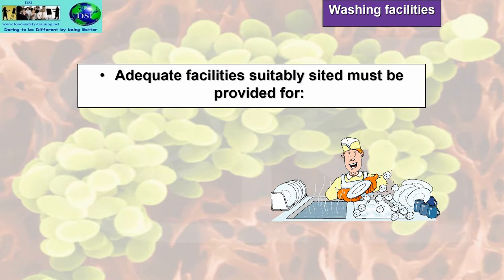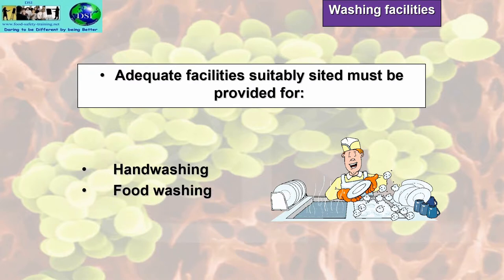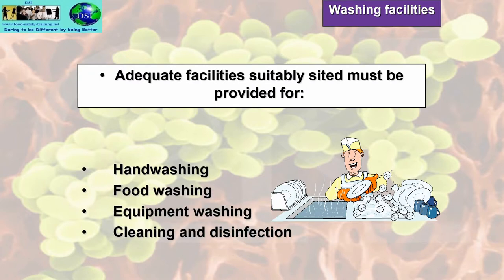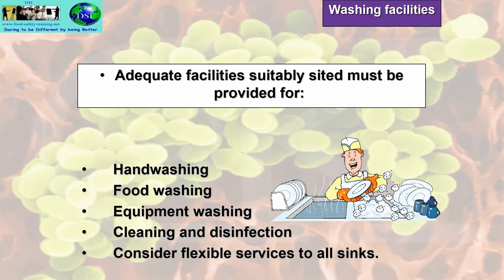Washing facilities: there must be adequate, suitably sited facilities provided for hand washing, food washing, equipment washing, cleaning and disinfection. You must also consider flexible services to all sinks — this allows easy access to clean behind them so the sinks can be moved out.